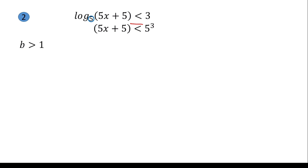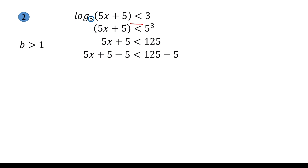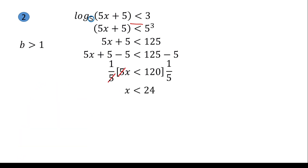Simplifying, 5x + 5 < 125. Apply APE: subtract 5 from both sides — 5x < 120. Then apply MPE: divide both sides by 5, giving x < 24.